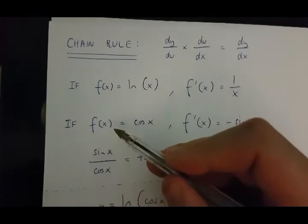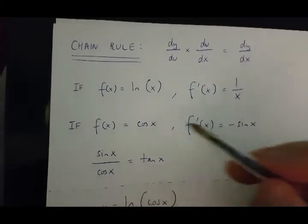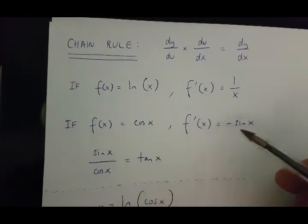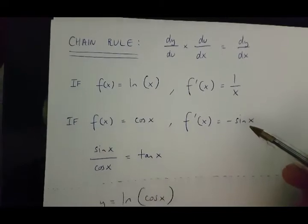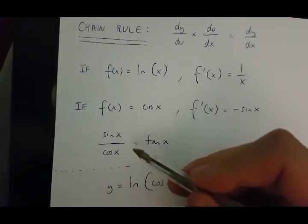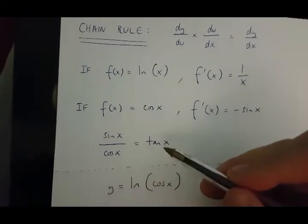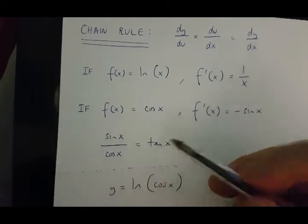And if function of x is cos x, then its derivative is minus sin x. Finally, sin x over cos x is the same as tan x.